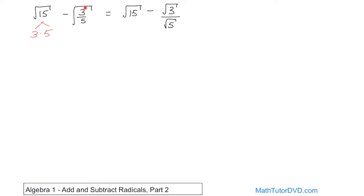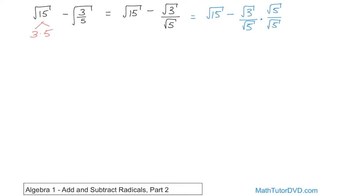Remember: when you have a fraction inside a radical, you can make it the radical of the top divided by the radical of the bottom. Now, we never want a radical in the denominator of a fraction — that's a general rule. So we need to multiply this whole fraction by square root of 5 over square root of 5, which is multiplying by 1.